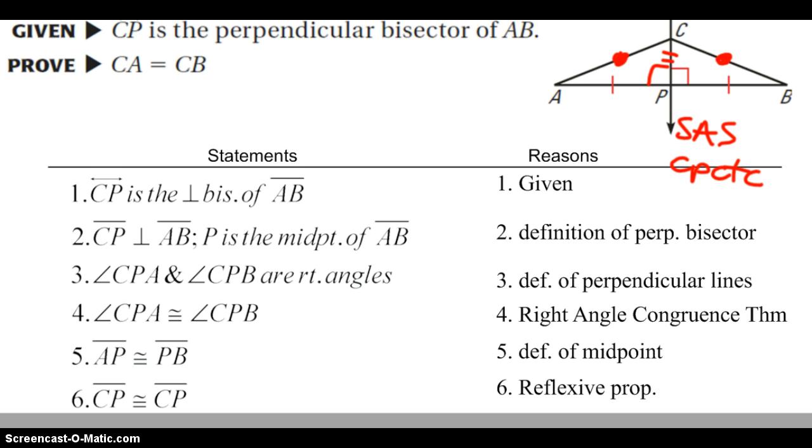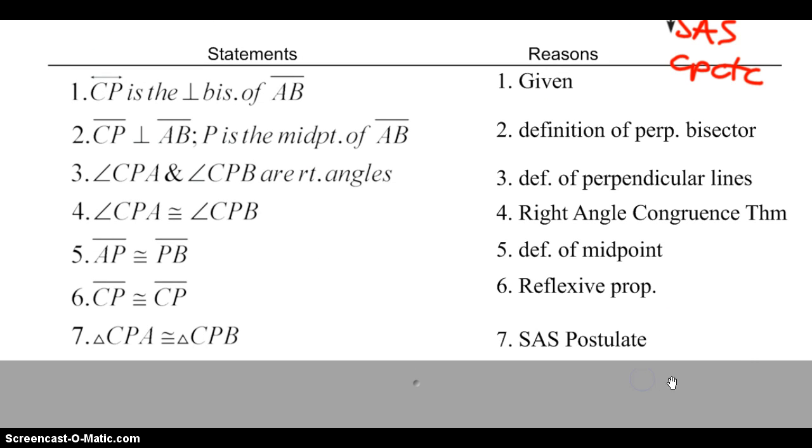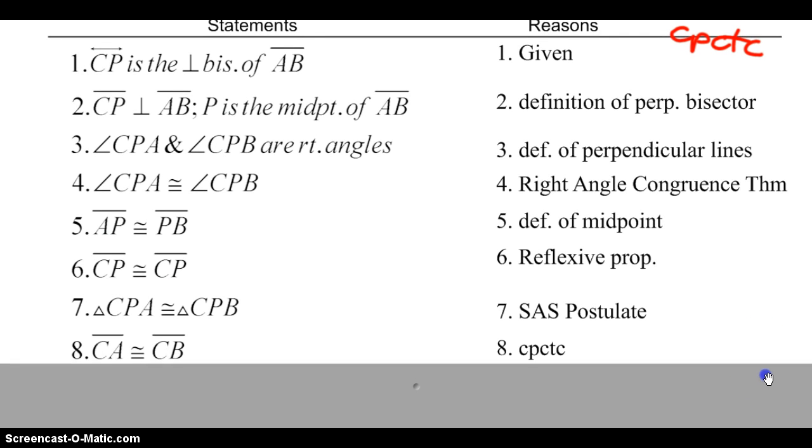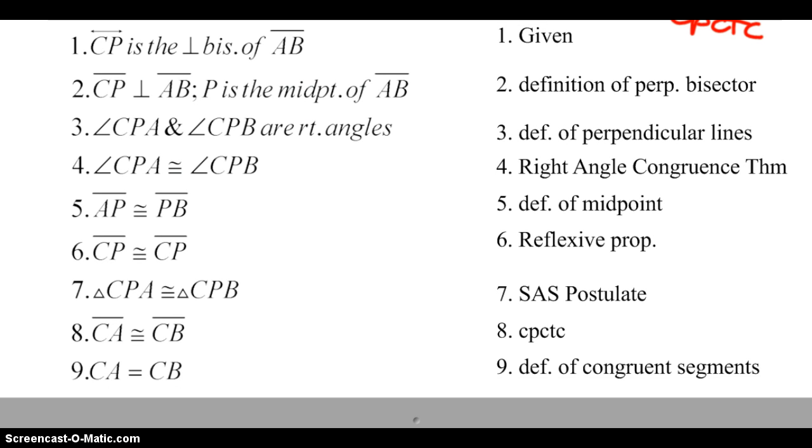Now you see it in the sketch. Let's write it out. We know the triangles are congruent by the side-angle-side postulate. Through corresponding parts, we know that the segments themselves are congruent. And by the definition of congruent segments, we know that the lengths are equal. We've completed the proof of the perpendicular bisector theorem.